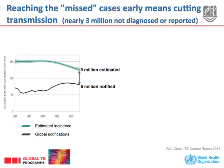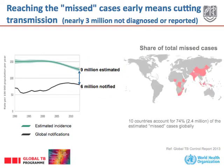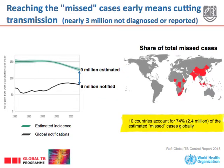This shows the issue of missed cases. There are nine million estimated cases and only six million notified. On the right are the 10 countries that account for three-quarters of the estimated missed cases.